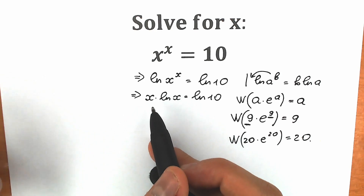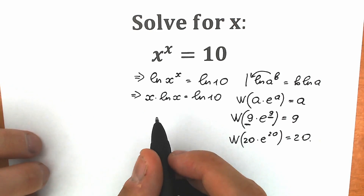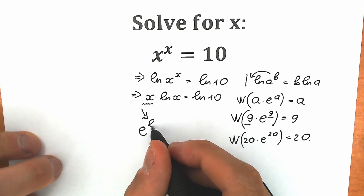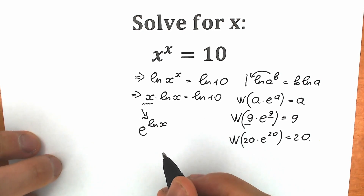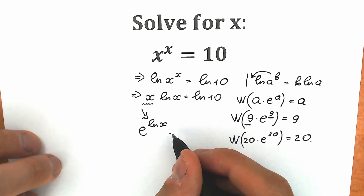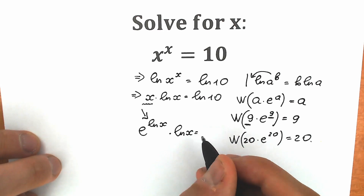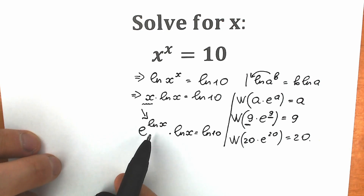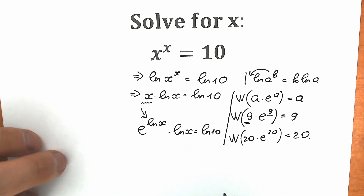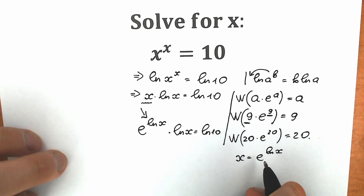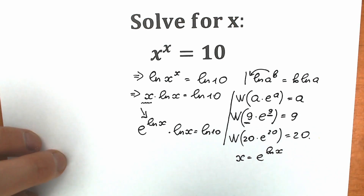But there is a really interesting trick: this x can be written as e to the power natural log x. We still have natural log x equal to natural log of 10 on the right. So instead of x, I write e to the power natural log x. This works because of the main log property — natural log of e cancels — so x equals e to the power natural log x. This is a great expression for us.